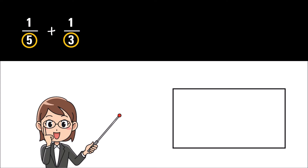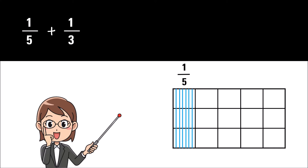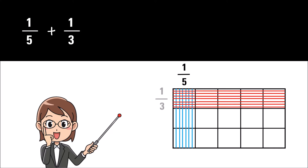You need to make five columns and three rows to represent the denominators. The result would make 15 boxes. This is the same as multiplying the two denominators. To represent the one-fifth fraction, fill the first column with vertical lines. To represent the one-third fraction, fill the first row with horizontal lines.